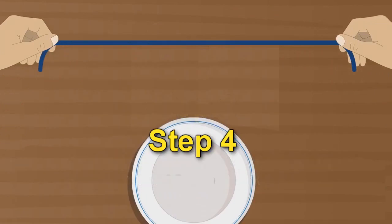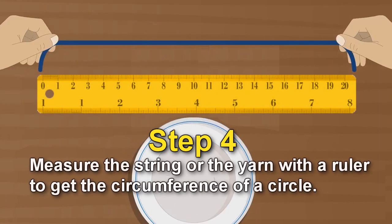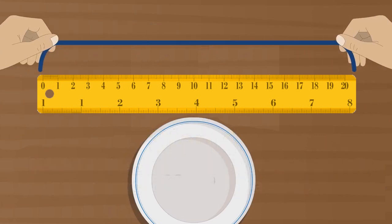Step 4: Measure the string or the yarn with a ruler to get the circumference of the circle. This is the circumference.